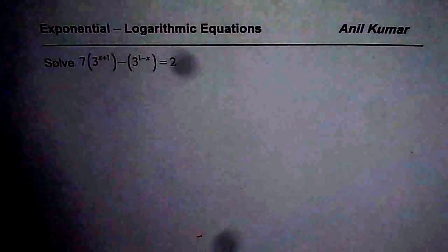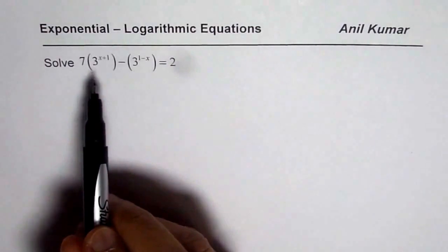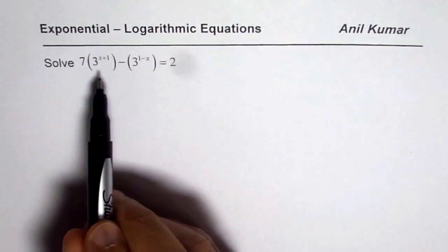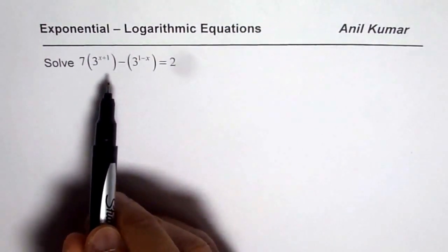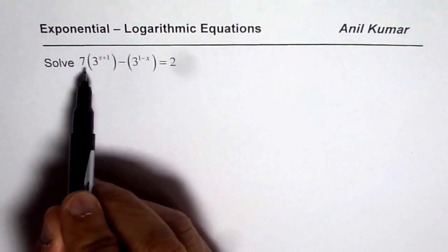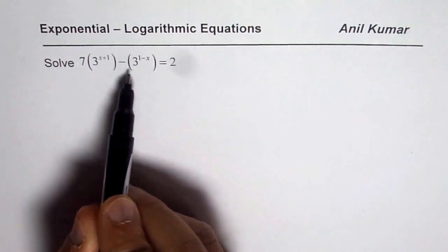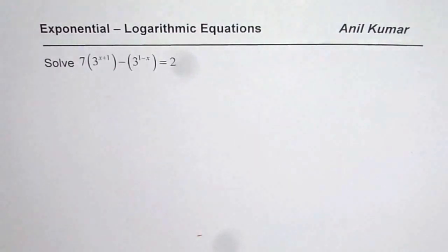I am Anil Kumar and here is another exponential equation which we can solve with the help of logarithms. In this equation we do have a common base of 3. So we have 7 times 3 to the power of x plus 1, minus 3 to the power of 1 minus x, equals to 2.